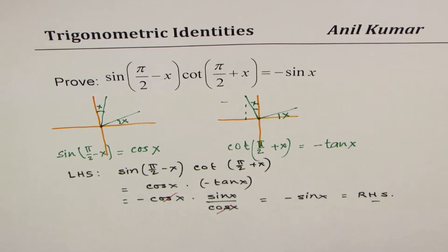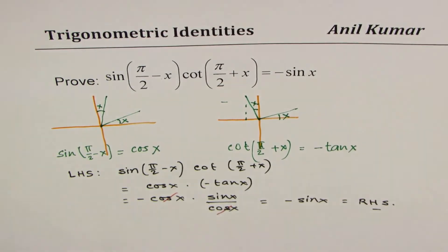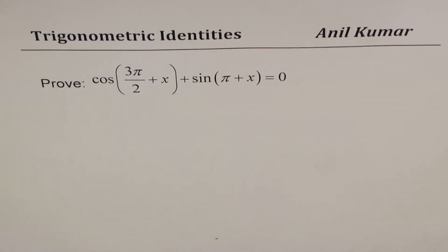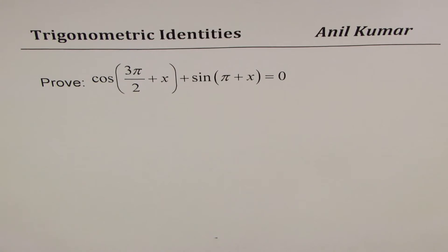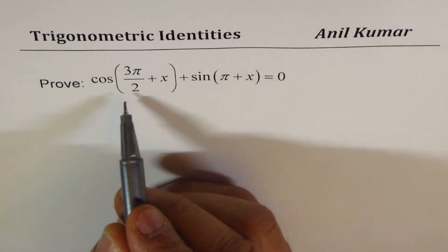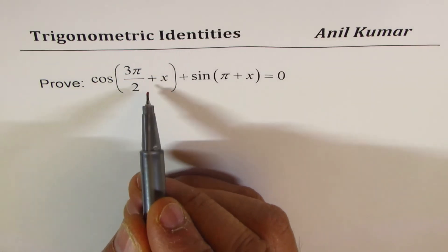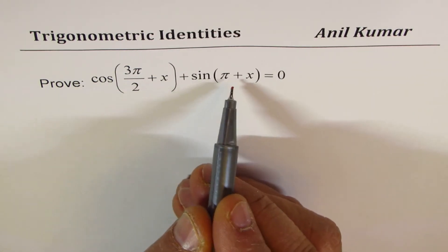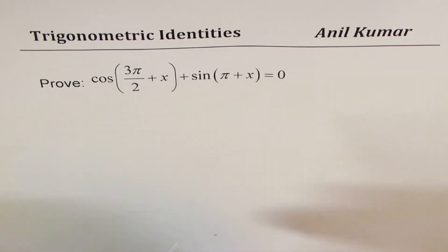So that is how you can prove it — simple and straightforward. Now let us take up the last identity based on related acute angles: cos(3π/2 + x) + sin(π + x) = 0.